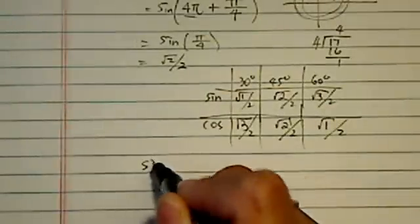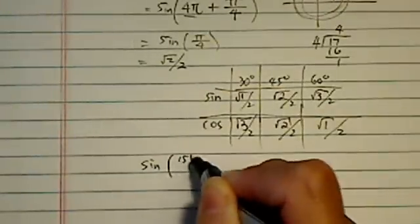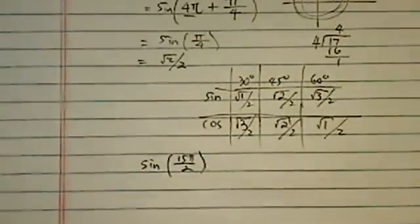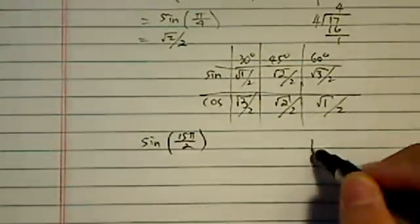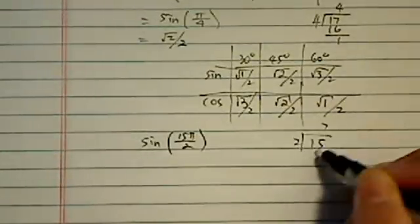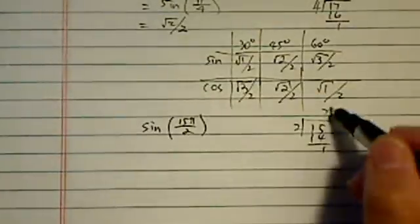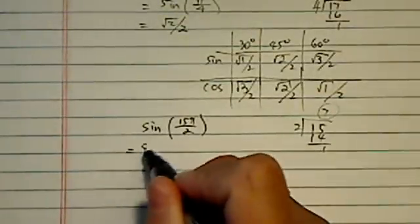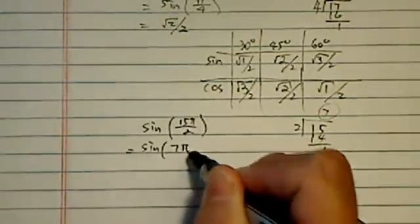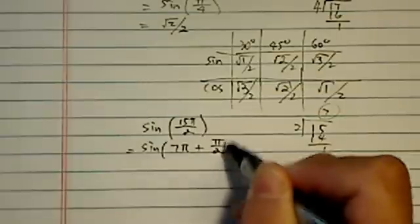I have another one to do. Sine of 15π over 2. We'll do the same, similar trick here. 15 divided by 2 is 7, remainder of 1. Now here we have an odd number. I'll show you how to handle this one. It's 7π plus π/2.